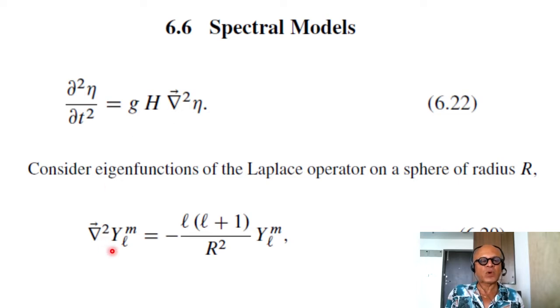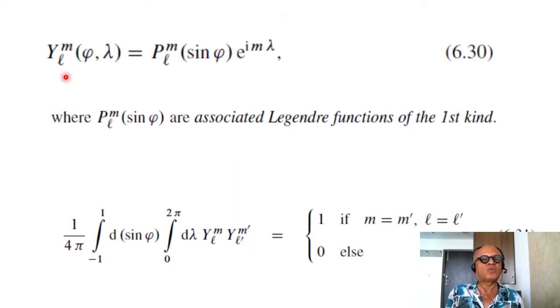So we can write grad squared Y_l^m, where l and m are actually zonal and meridional wave numbers, and that becomes minus l times l plus 1 over R squared, R is the radius, times Y_l^m. So you can see this is a matrix being written in the eigenfunction form. Here Y_l^m as a function of latitude and longitude gets represented as P_m^l sin phi times e to the i m lambda, where P_m^l sin phi are associated Legendre functions of the first kind. Basically spherical harmonics.